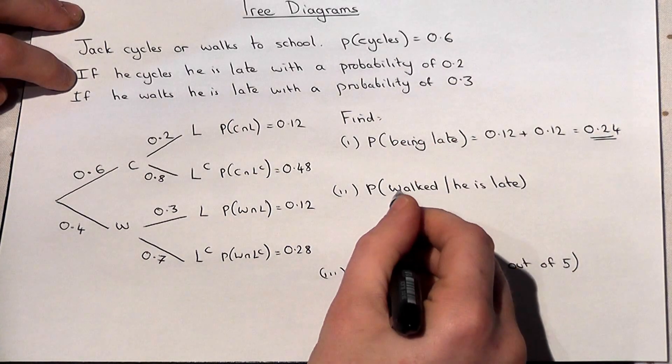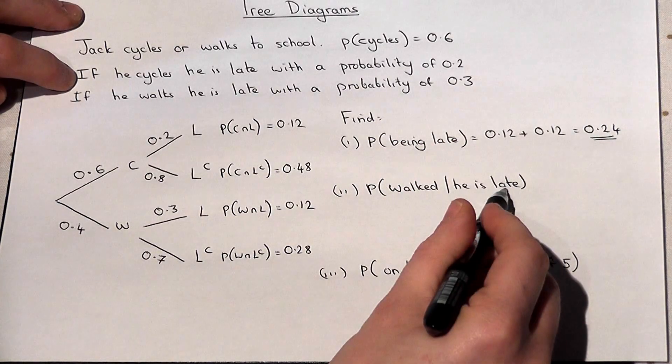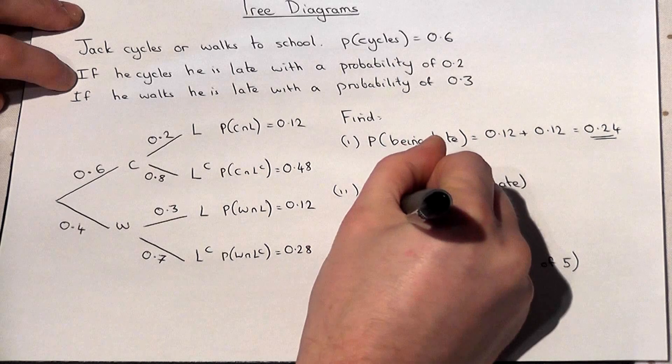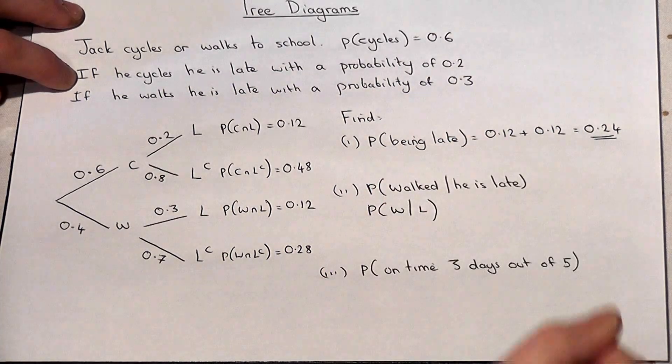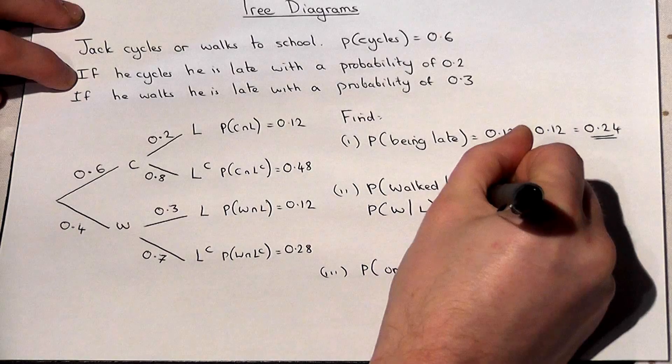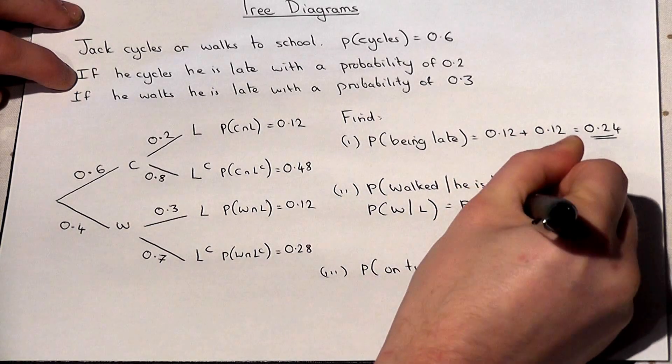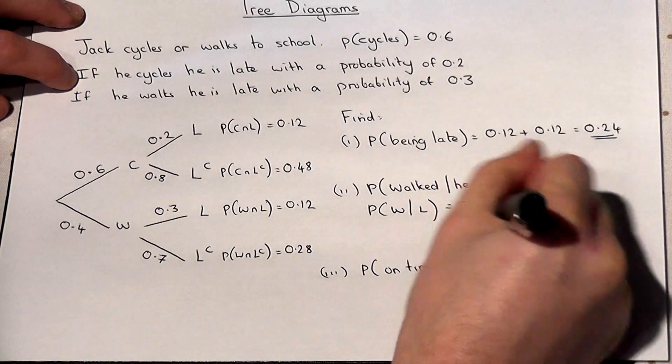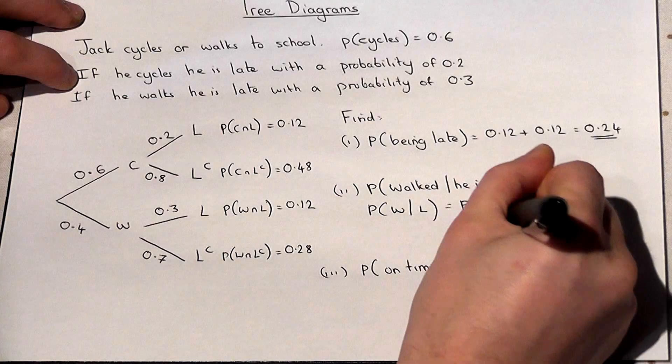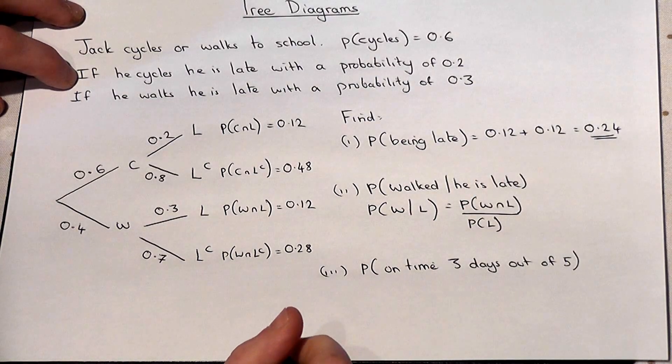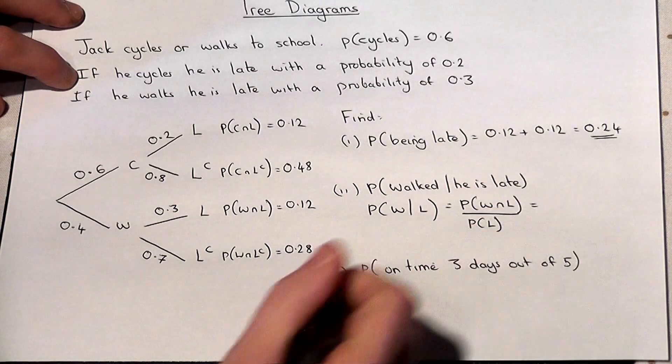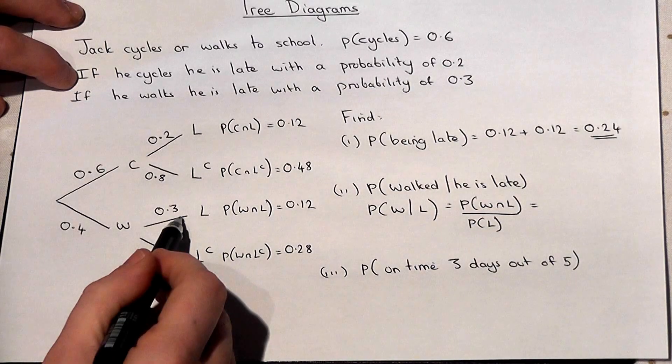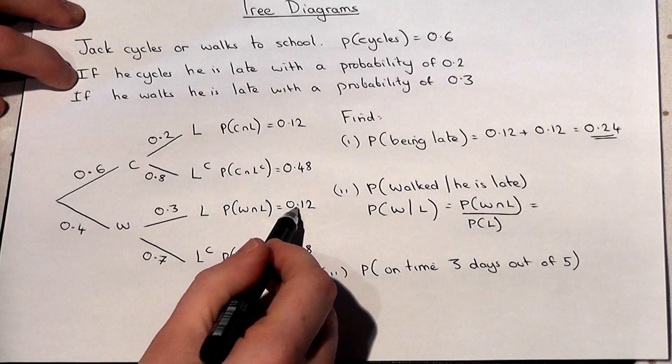If I denote this by W and this by L, the chance walked given that he is late is walked and late over late. Now then walked and late, that is 0.12.